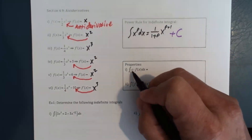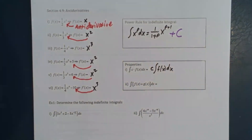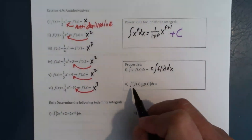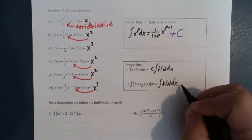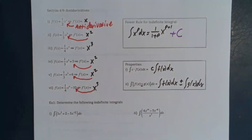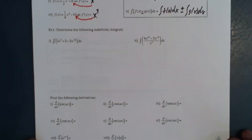Some properties of an integral: when I have a constant times a function, I can actually bring that constant to the outside before I find the anti-derivative. For the rest of the semester we will be focusing on integrals, and the first big chapter in Calculus 2 is all integrals as well. Also, if I have the integral of f(x) plus or minus g(x), I can actually break this up into plus or minus the integral of g(x) dx. We'll learn more about the dx, but for now we're figuring out what we're trying to do here.